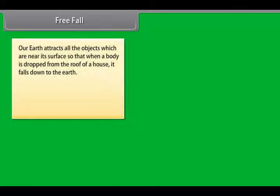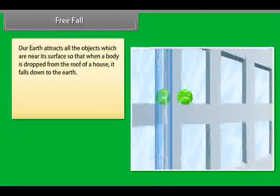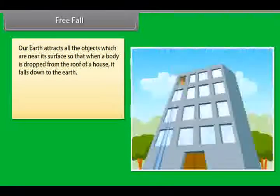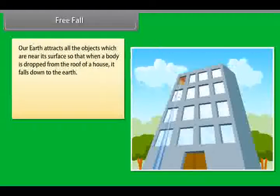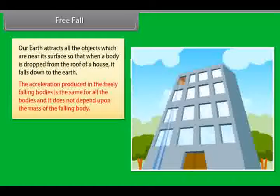Free fall: our earth attracts all objects near its surface, so that when a body is dropped from the roof of a house it falls down to the earth. The acceleration produced in freely falling bodies is the same for all bodies and does not depend upon the mass of the falling body.